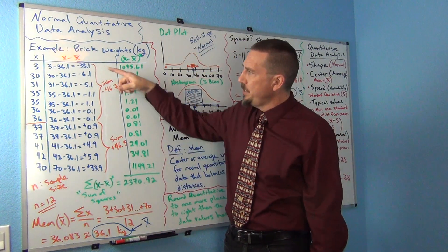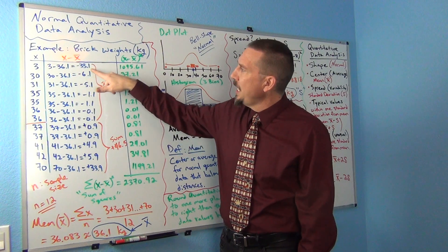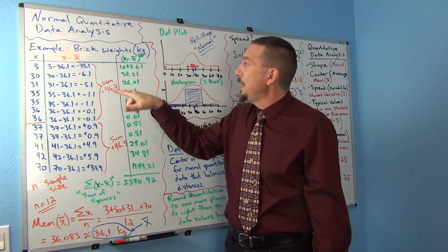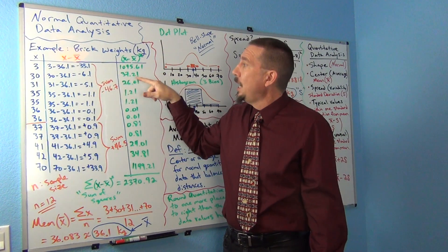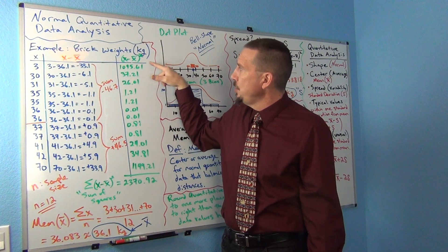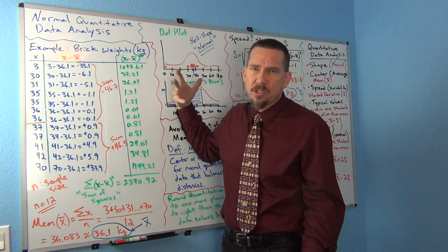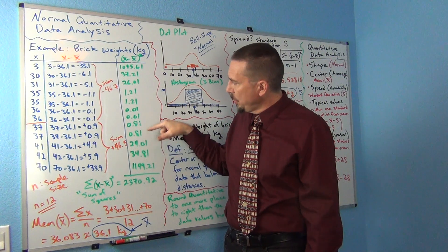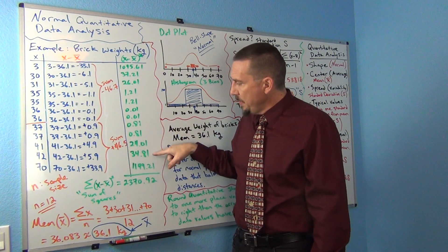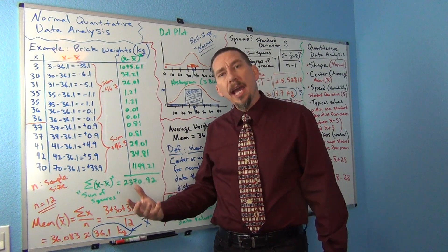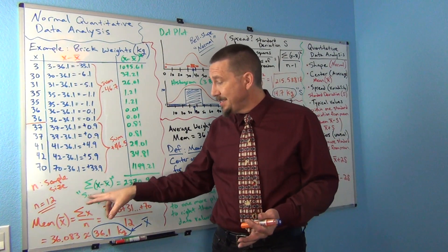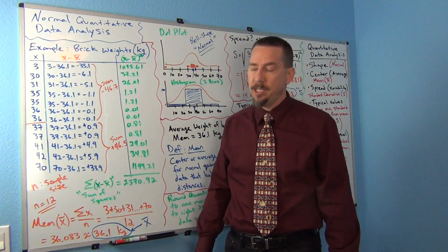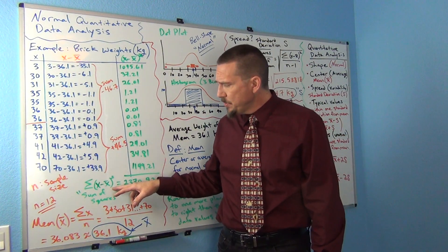We call it a sum of squares calculation. It's very popular, very famous in statistics. We basically square all the distances to get rid of the negatives. Negative 33.1 squared gives positive 1095.61. Negative 6.1 squared is positive 37.21. These are sometimes called the squares, the squares of the differences. I'm squaring each of these numbers, even the positive ones. Then I'm going to add up the squares. That's a very famous statistic, called a sum of squares. A lot of things use a sum of squares calculation.